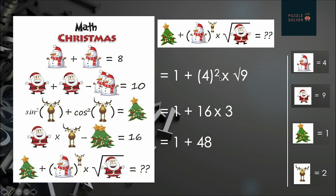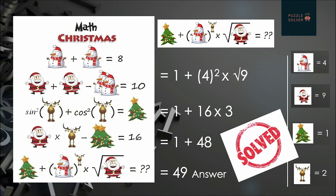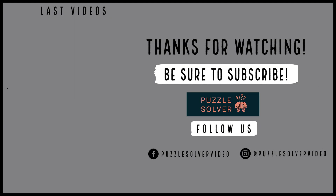Solving square and square root first: 4² = 16 and √9 = 3. Now solving multiplication: 16 × 3 = 48. Then addition: 1 + 48 = 49. The final answer is 49. We have solved this puzzle!